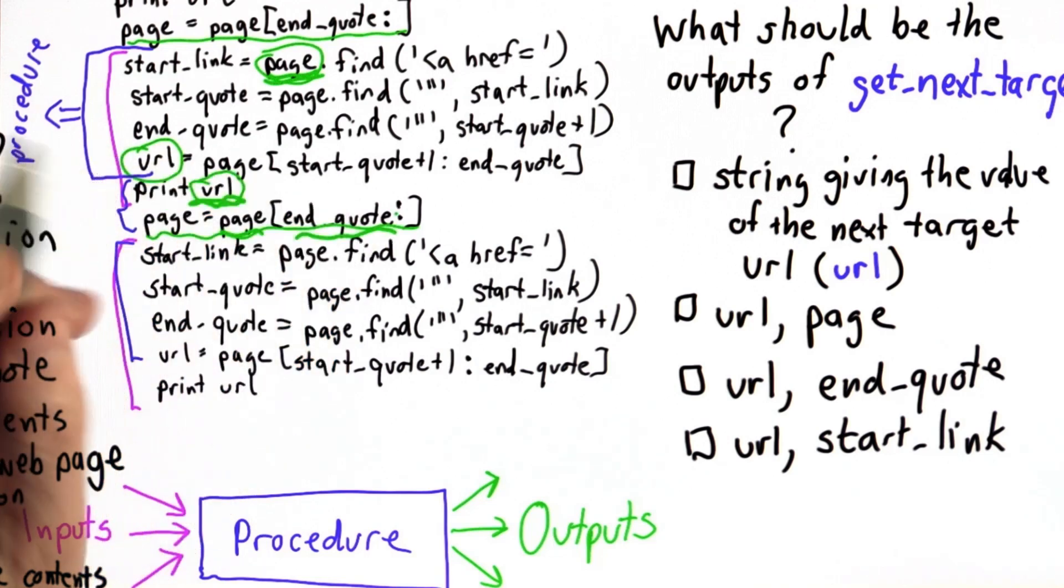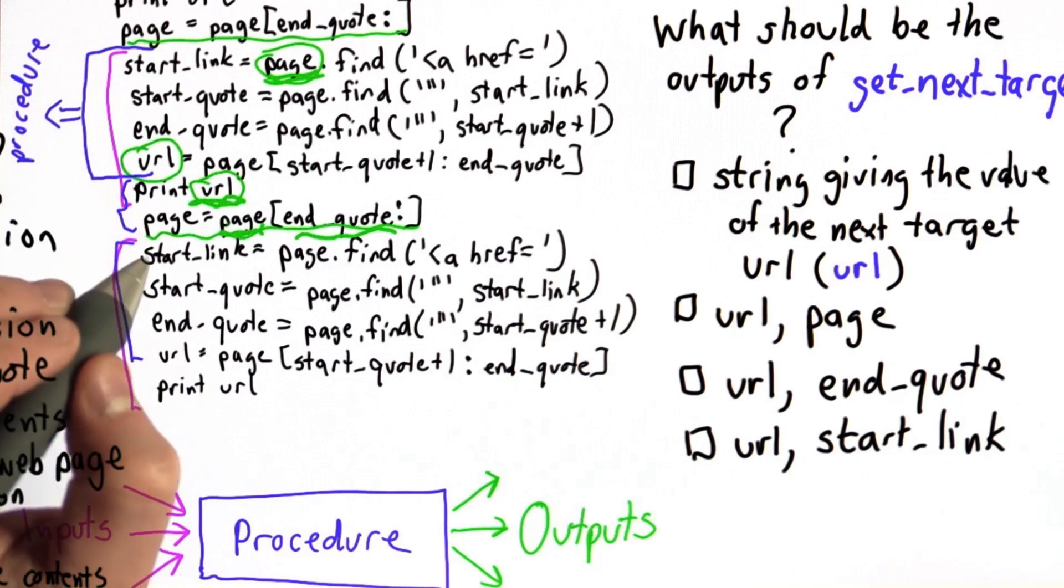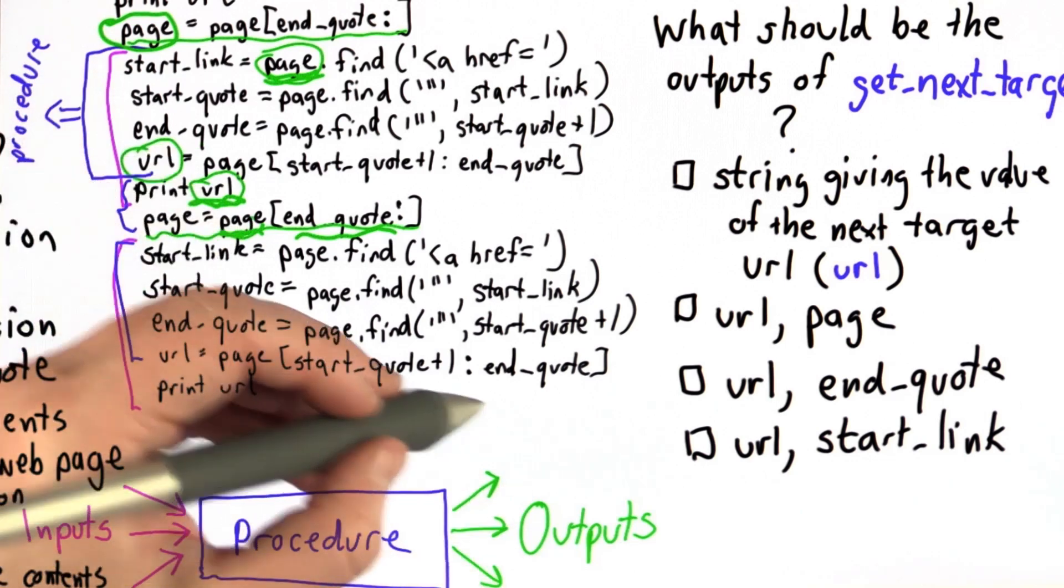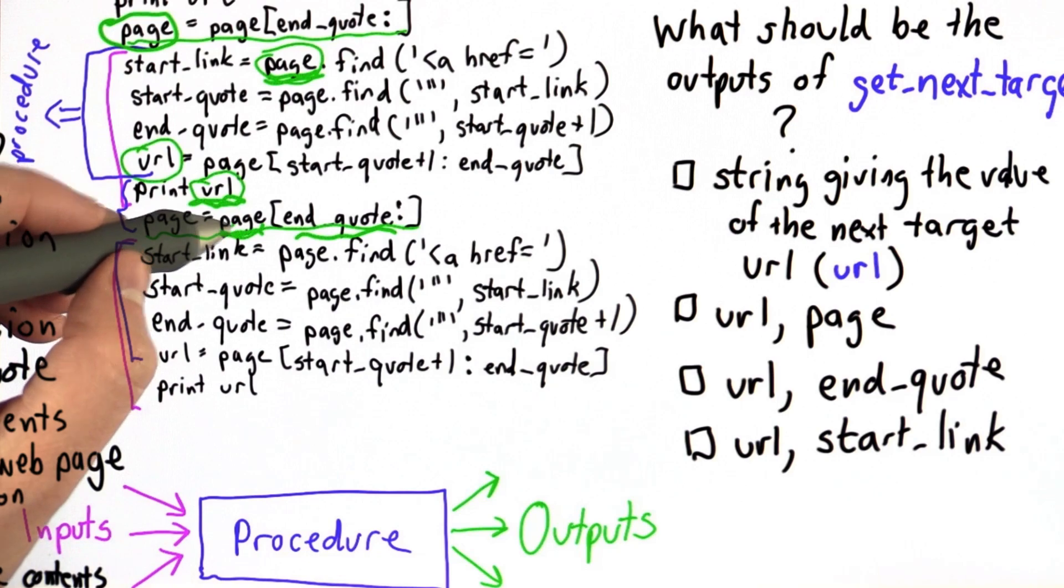Well, this uses both page and end quote. The value of page here is the same as the value of page before the procedure. So we don't actually need to return the value of page. It doesn't need to be an output from the procedure because we already know that. We knew that before we called the procedure. The procedure doesn't change the value of page. No sense making it an output.